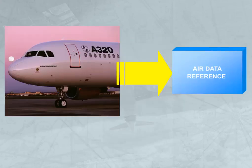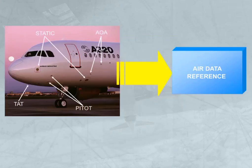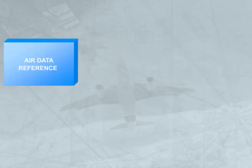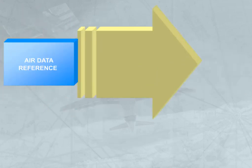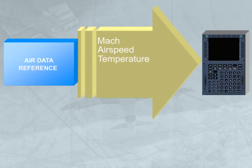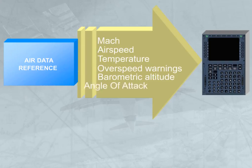The ADR part receives information from aircraft probes and sensors. The ADR part provides various items of air data to the Flight Management and Guidance Computers (FMGC) and other users. The air data provided includes MAC, airspeed, temperature, overspeed warnings, barometric altitude, and angle of attack.